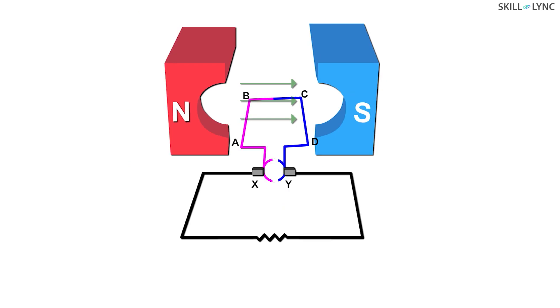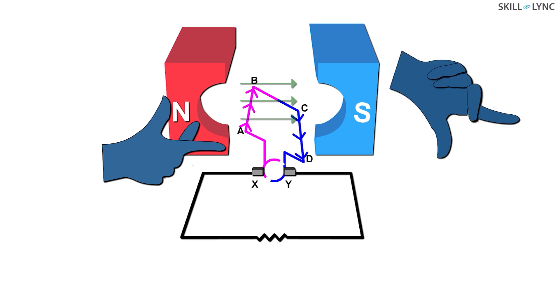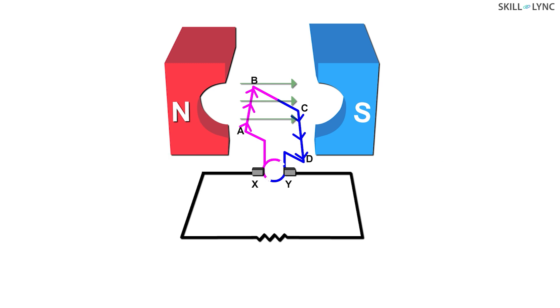As the armature is rotated, the AB side goes upward and the CD side comes downwards. If we use Fleming's right-hand rule, then we will get the direction of the current to be from A to B. Similarly, if we apply this rule on the side CD, then we will get the direction of the current to be in the downward direction. This goes on for half a rotation.